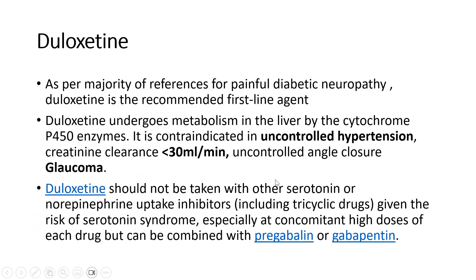Duloxetine is a drug we should know thoroughly regarding side effects and contraindications. In prior NICE and ADA guidelines it was the recommended first-line agent for diabetic neuropathy, and many references still list it as first line. If an exam question asks for the recommended first-line agent and the option of offering all drugs as a choice is not available, duloxetine would be the appropriate answer. Duloxetine undergoes hepatic metabolism via cytochrome P450 enzymes and is contraindicated in uncontrolled hypertension.